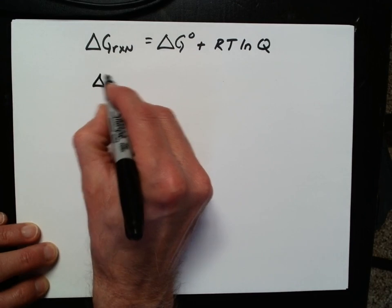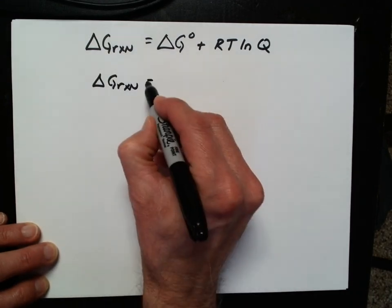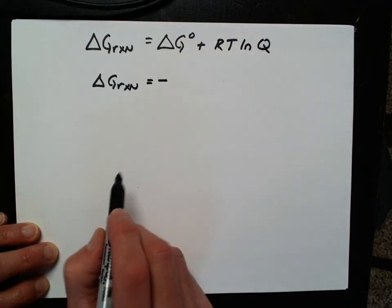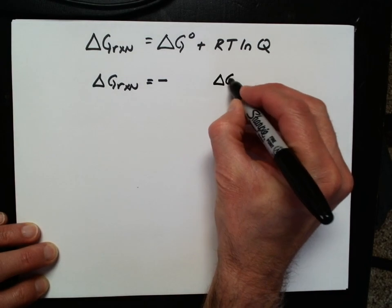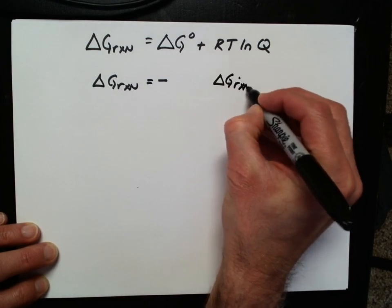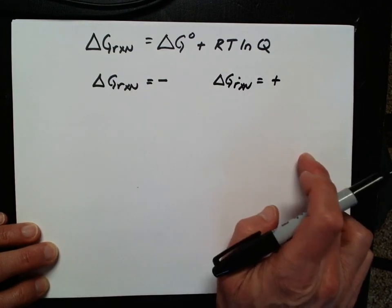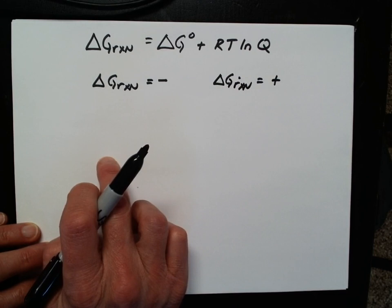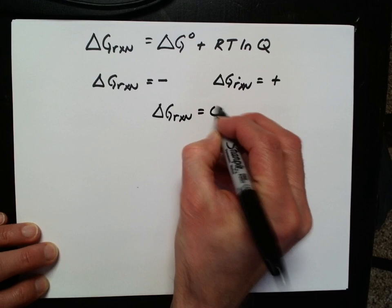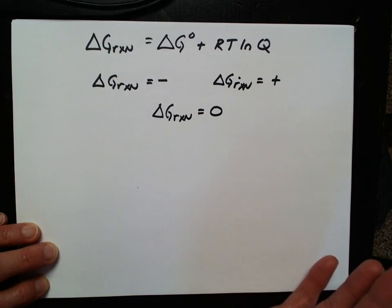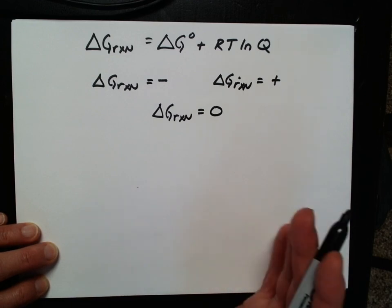Once we calculate the delta G for the reaction, just like any other process, we know that if delta G is negative, the reaction is going to be spontaneous in the forward direction. If delta G is positive, it's going to be non-spontaneous in the forward direction, but spontaneous in the reverse direction. If delta G equals zero, it's at equilibrium and doesn't proceed in either direction on a large scale.